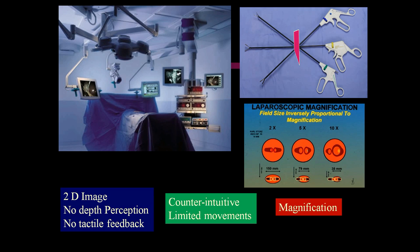Also, the movements are very limited because the laparoscopic hand instruments are nothing but extensions of the conventional instruments. The working hand can only move in two directions — right and left, and up and down — unlike the robotic wrist-like movements. Additionally, the magnification makes all the hand tremors very obvious. With all this, it is very difficult in the beginning of our career to do laparoscopy.